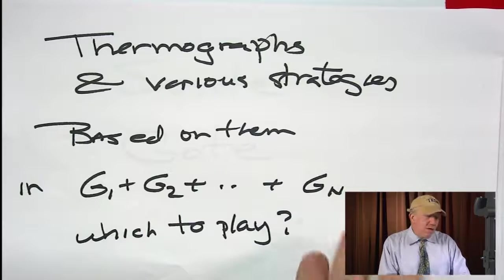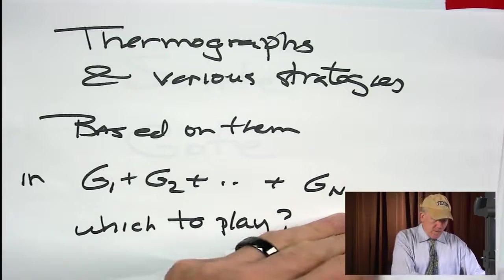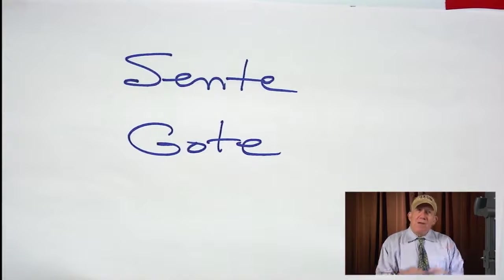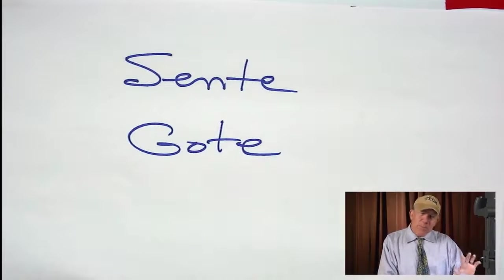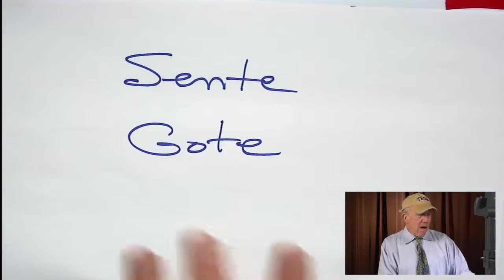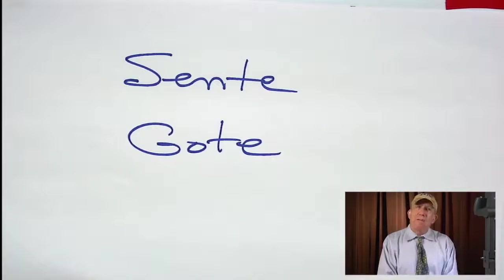And so this is our Japanese terms. Sente-gote. Sente means, to have sente means that you play a move and you force your opponent, you have the initiative, the opponent has to respond to your move. Gote is the opposite, where you play and your opponent can play in some other game.